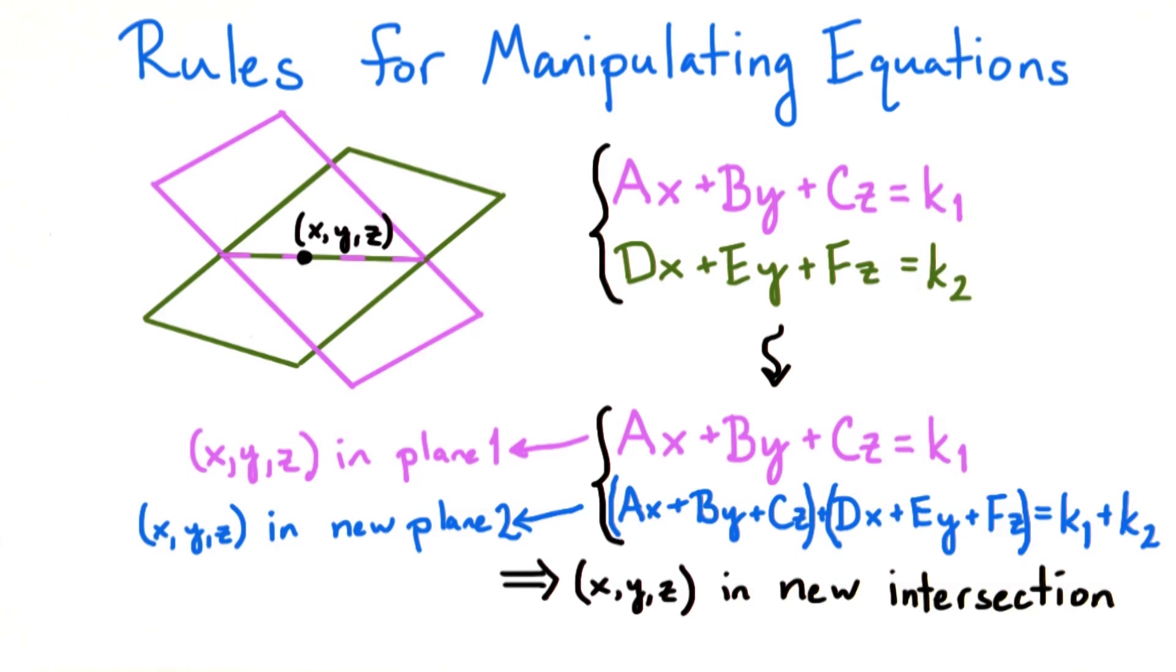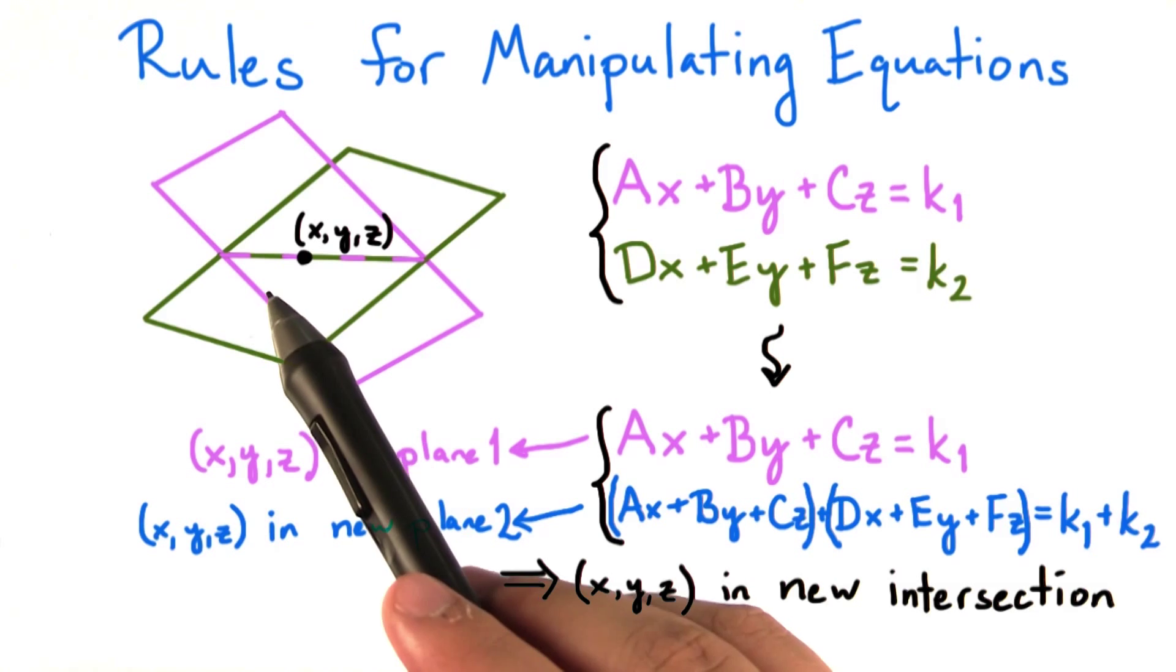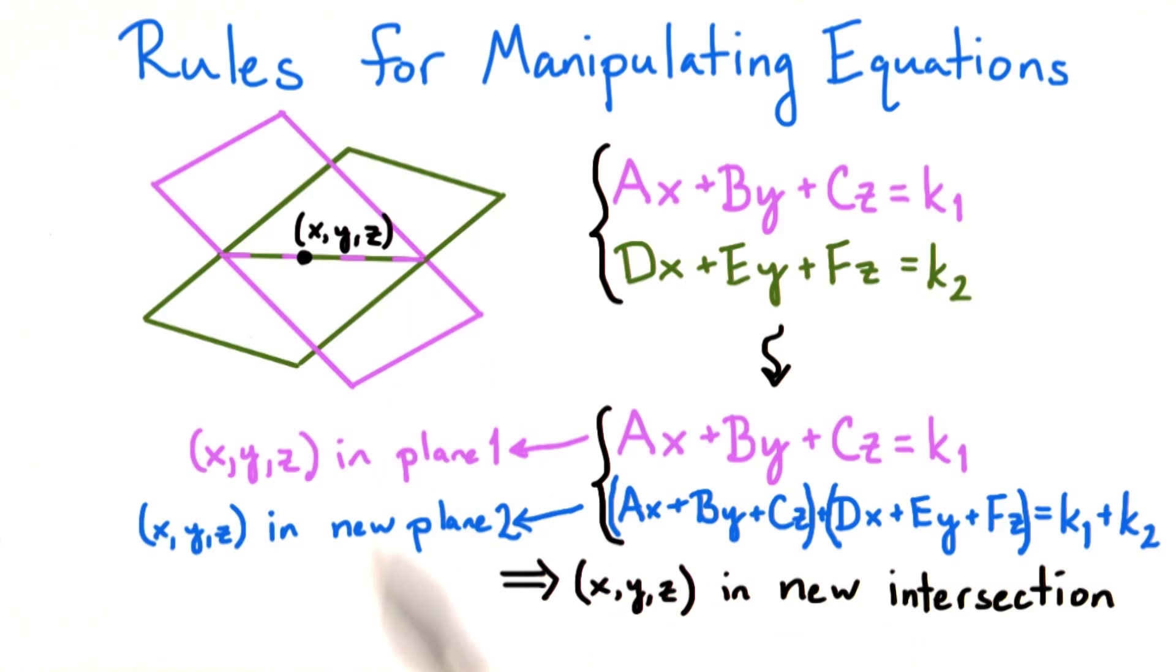Therefore, x, y, z is in the first plane and in the new second plane, which means that the point x, y, z is in the new intersection of the two planes. Since this is true for any point x, y, z in the old intersection, it means that all of the points in the old intersection are contained in the new intersection.